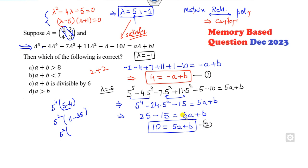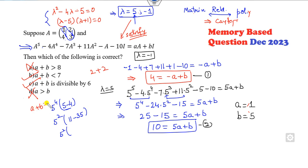Now you have two equations: −a + b = 4 and 5a + b = 10. Subtracting gives a = 1, and then b = 5. Check the options: a + b = 6, so a + b is divisible by 6 — correct. a + b is not divisible by 4. a > b is wrong since 1 < 5. You can verify any other memory-based options using these values of a and b.